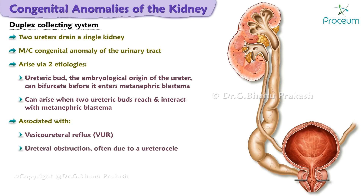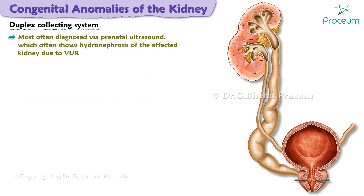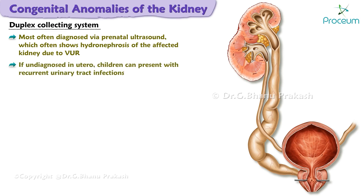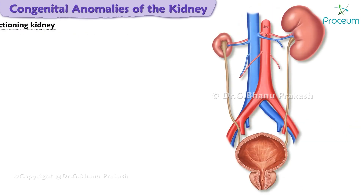Duplex collecting system is associated with vesicoureteral reflux, ureteral obstruction — often due to a ureterocele — and urinary tract infections. It is most often diagnosed via prenatal ultrasound, which often shows hydronephrosis of the affected kidney due to vesicoureteric reflux. If a duplex collecting system isn't diagnosed in utero, children can present with recurrent urinary tract infections.